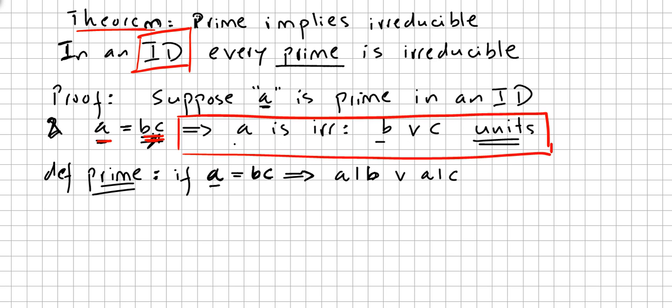And this here in red is what we want to prove. Because if we want to prove that if it is a prime then it is irreducible. So we pick a and we say that a equals this bc. So we have to prove that that implies that a is irreducible. Irreducibility means that if a equals bc, either b or c is a unit.